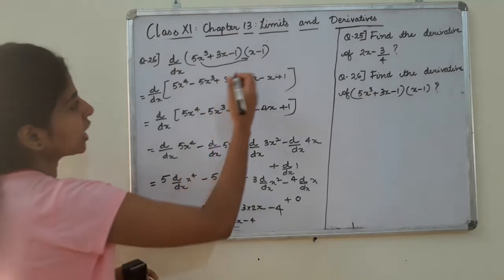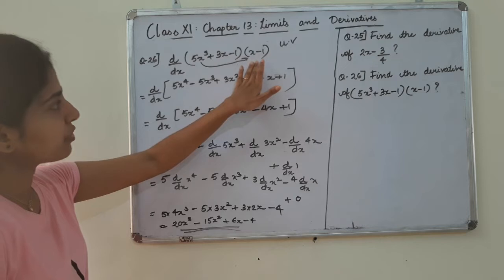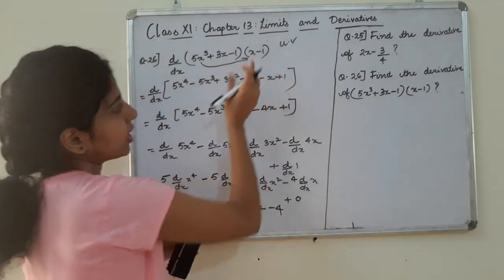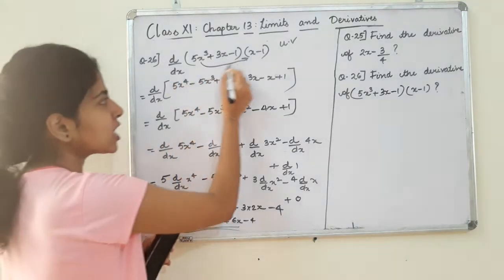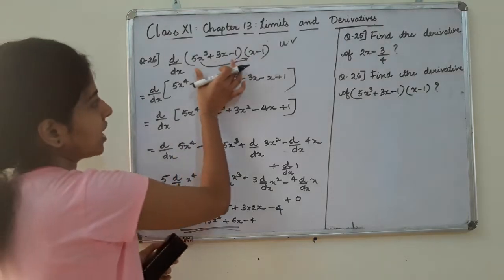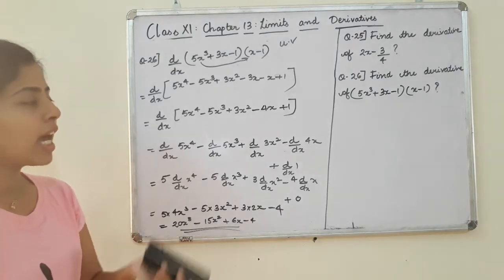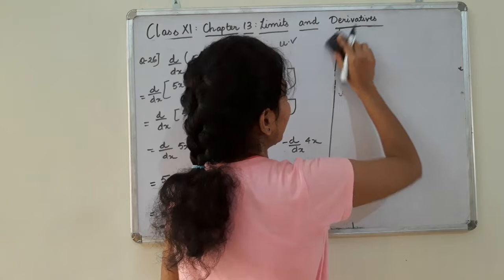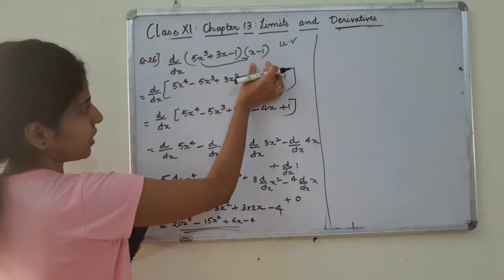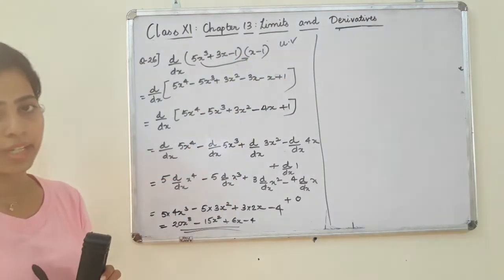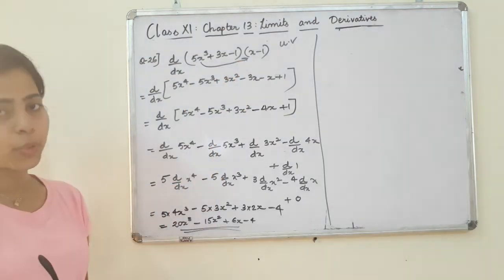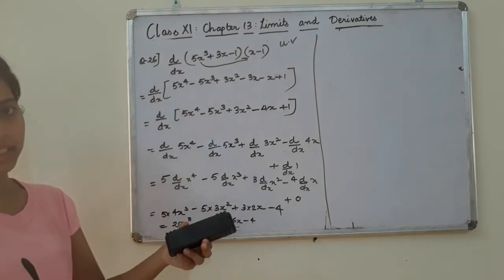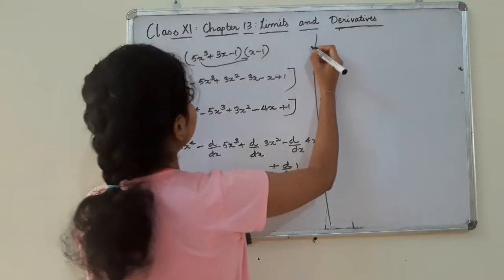Here we will use one approach: U and V product rule. Because if there is a multiplication sign between two functions, we use the product rule. But you can also just expand it — open the brackets, use the plus sign — it will be more comfortable. If you apply the UV rule, you can use it, but expanding is often simpler. The multiplication sign indicates we could use the product rule.